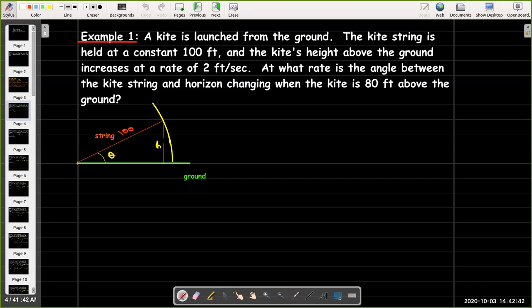So, the height is changing at a rate of 2 feet per second, and we'd like to know at what rate is this angle theta increasing. So, we know dh/dt is 2, and we want dθ/dt when h equals 80.